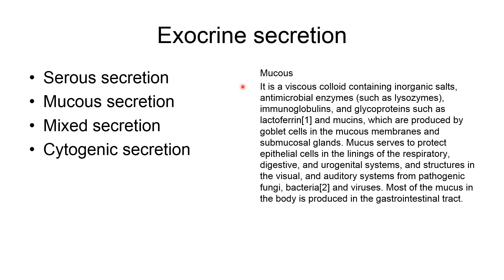Mixed exocrine glands produce both serous and mucous secretions — for example, salivary glands produce saliva and some mucus. Cytogenic glands are entirely different: they release whole cells, such as the testes and ovaries, which release sperms and eggs respectively. These are the main types of exocrine secretions.